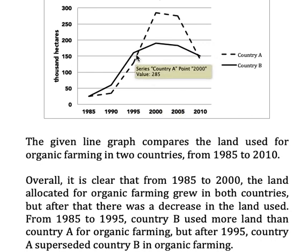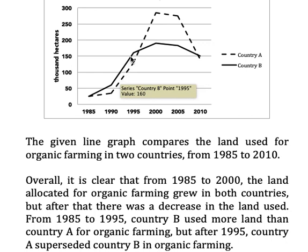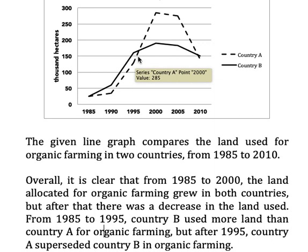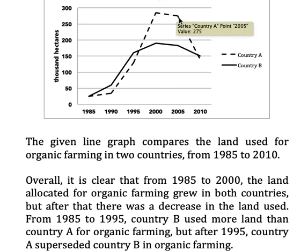Till 1995, country B used more land than country A for organic farming. But after 1995, country A superseded — superseded means 'to leave behind' — it superseded country B in organic farming. This is the overview: there is no data, just the two main things of comparison and trends.